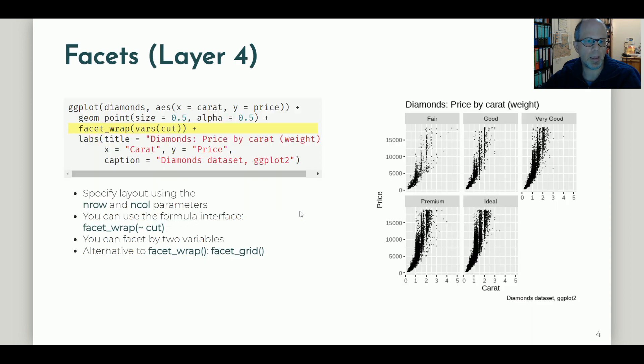The first advanced layer that we look into is the facets layer. Here you see the highlighted code gives us a one-liner that is enough to get five subplots for the five levels of the cut variable. There are five types of cuts in this data set from fair to ideal, and with a simple one-liner we get five subplots.